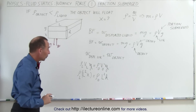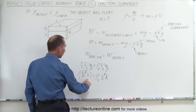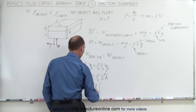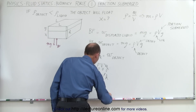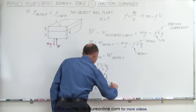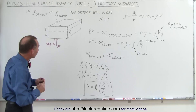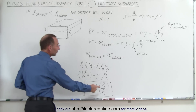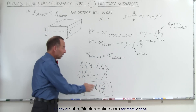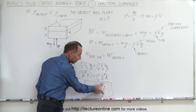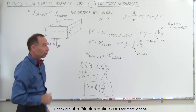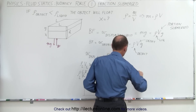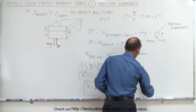We can see that on both sides of the equation, l² cancels out. Solving for x, we get that x is equal to the height or thickness of the object times the ratio of the density of the object divided by the density of the liquid. So x = h × (ρ_obj / ρ_liq). We can also express this as a ratio: x/h = ρ_obj / ρ_liq. Remember that when the object floats, the density of the object is smaller than the density of the liquid, so this fraction is less than one, and x is only a fraction of h.